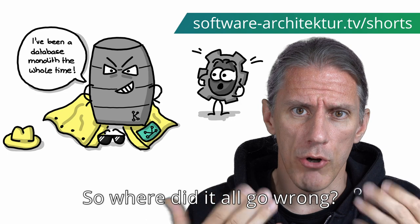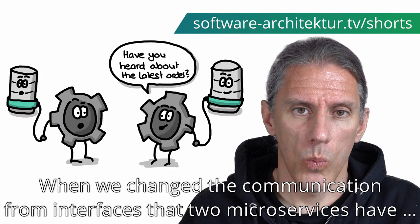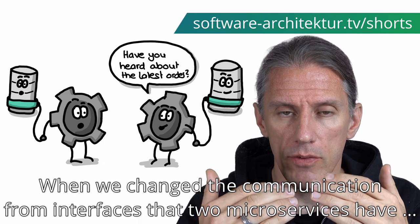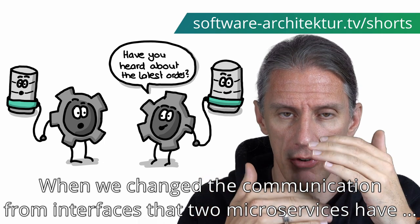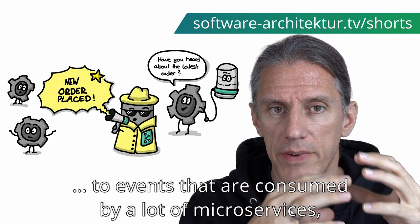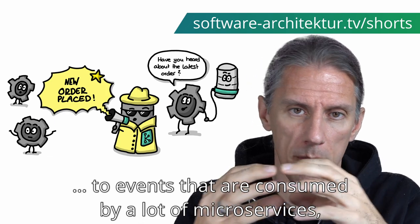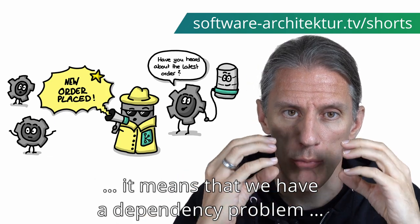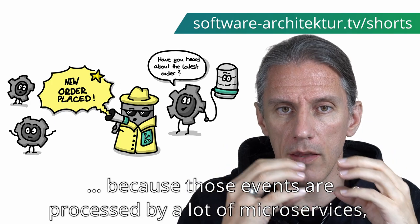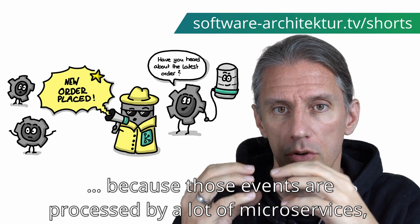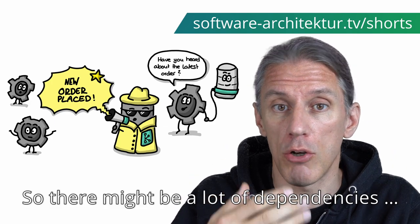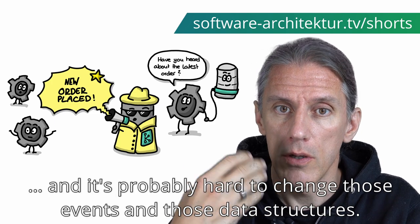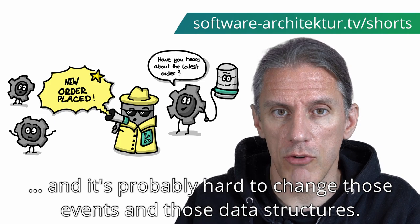So where did it all go wrong? When we change the communication from interfaces that two microservices have, to events that are consumed by a lot of microservices, it means that we have a dependency problem — because those events are processed by a lot of microservices, there might be a lot of dependencies and it's probably hard to change those events and those data structures.